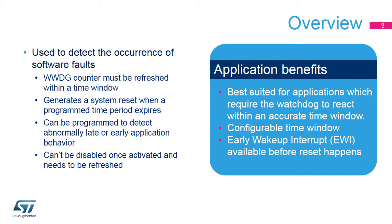The Window Watchdog is used to detect the occurrence of software faults. It can be programmed to detect abnormally late or early application behavior, and is best suited for applications required to react within an accurate timing window. Once enabled, it can only be disabled by a device reset.